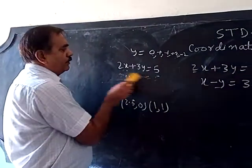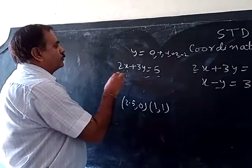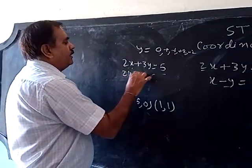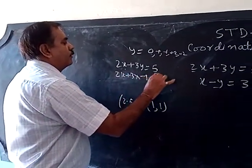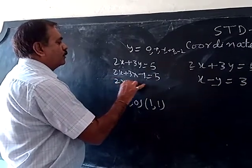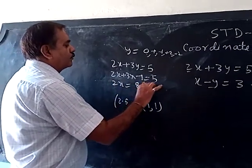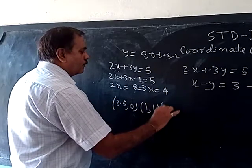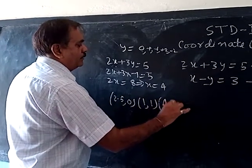Now one more, three coordinates you have to find. So 2x plus 3 into minus 1 is equal to 5. So 2x is equal to 8, x is equal to 4. So another coordinate is (4, -1).